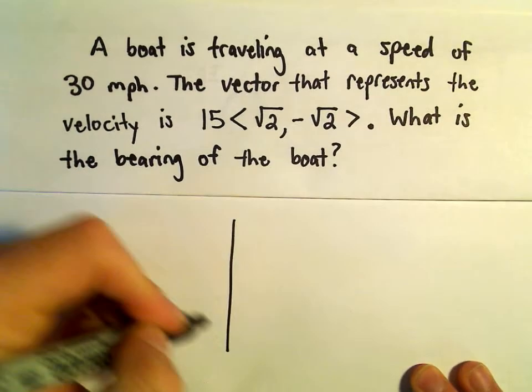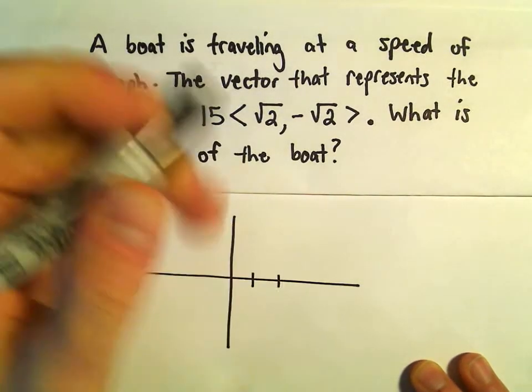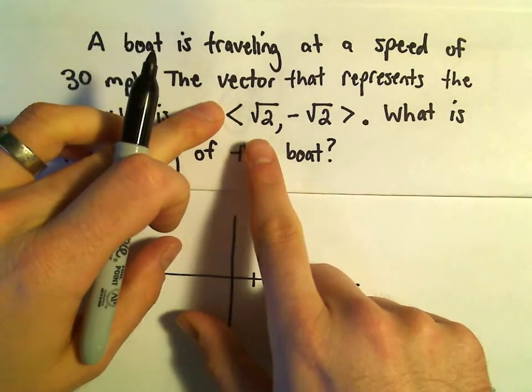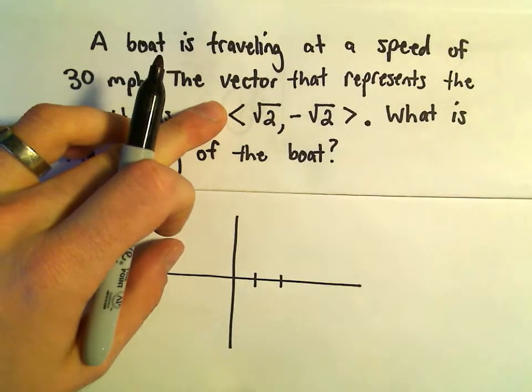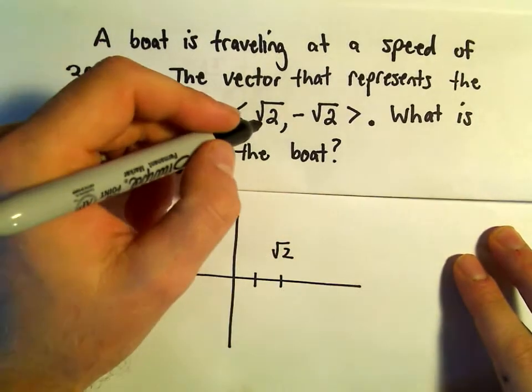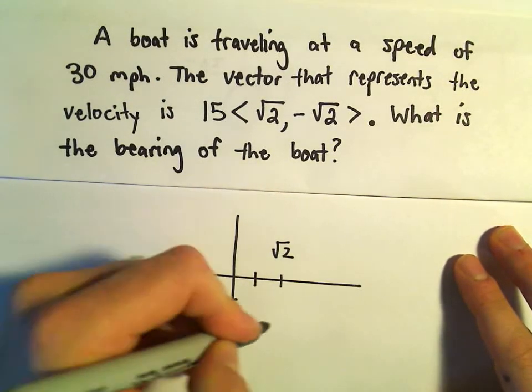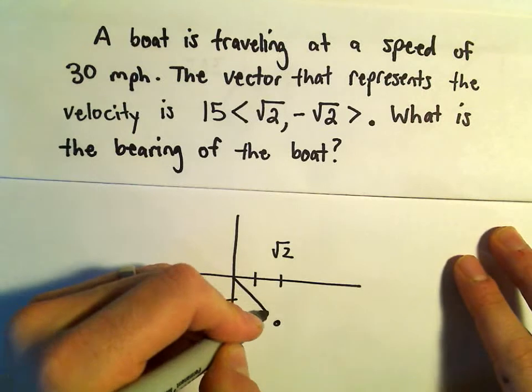Alright, so a couple things here. First off, I'm just going to draw the vector with components root 2 comma negative root 2. So I would just move positive square root of 2 units to the right and down negative square root of 2 units. And that would give us our vector.